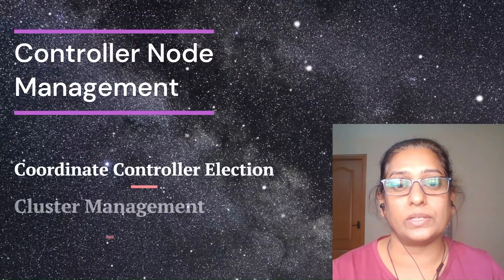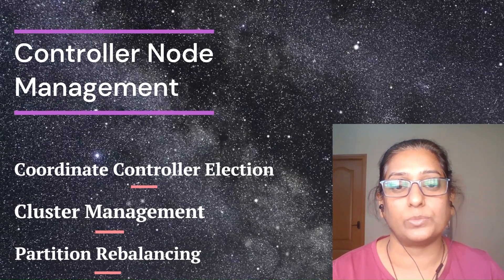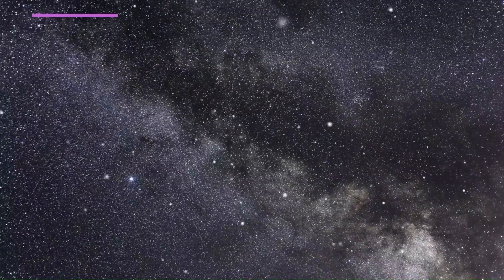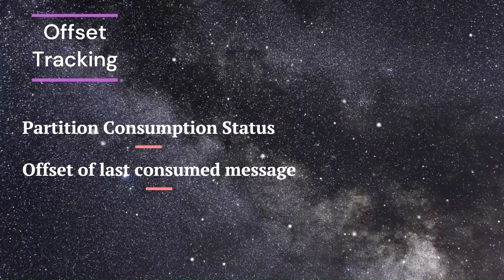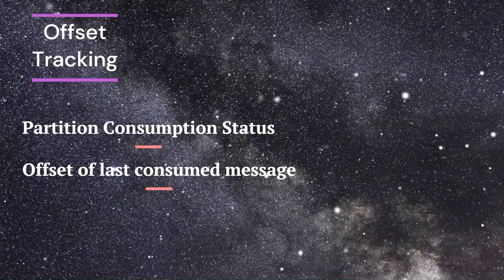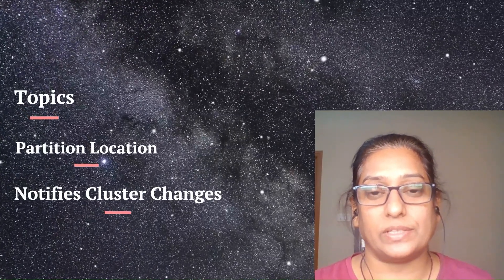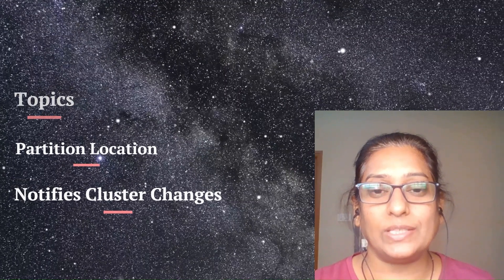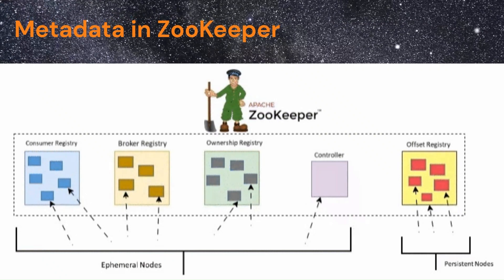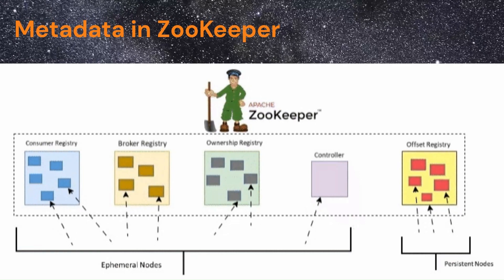ZooKeeper has been instrumental in coordinating the election of the controller broker, which is responsible for cluster management and partition rebalancing. ZooKeeper maintains the partition consumption status and tracks the offset of the last message consumed in each partition. It also has information on all the topics created in the cluster, the location of each partition, and notifies Kafka of any changes in the cluster, like a broker being added or dying, or a consumer being added or deleted.